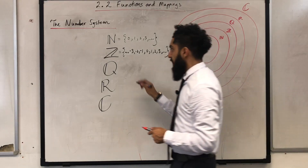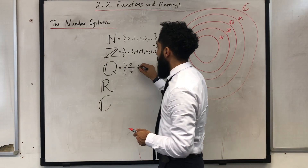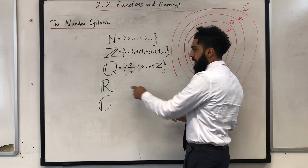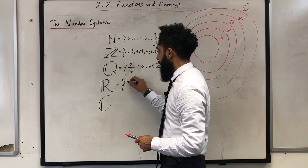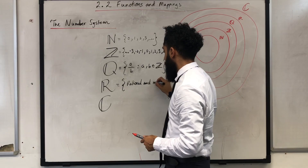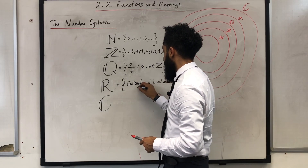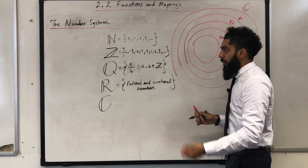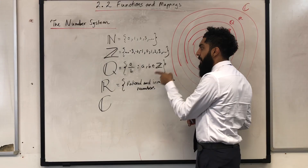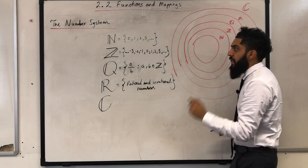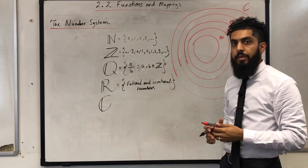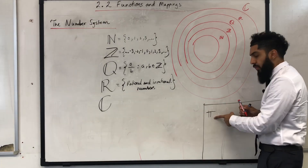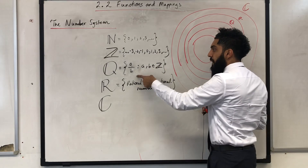The set of rational numbers consists of all numbers of the form A over B, such that A and B are elements of the set of integers. The set of real numbers consists of rational and irrational numbers. Any number that can't be written in the form A over B, where A and B are integers, is an irrational number. For example, pi is irrational because it can't be written in the form A over B where A and B are integers.